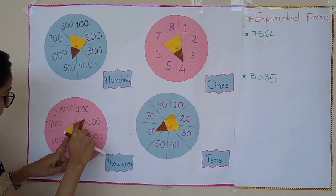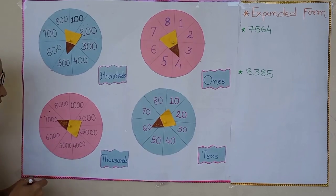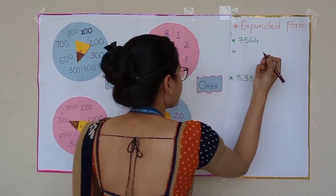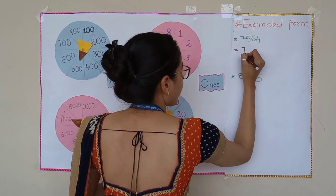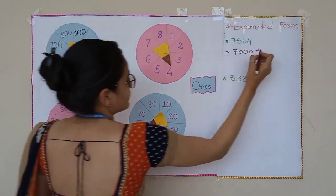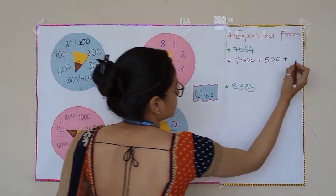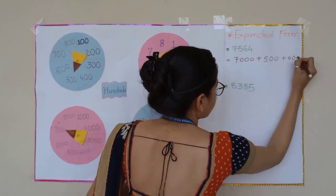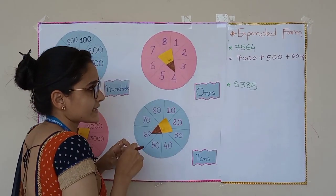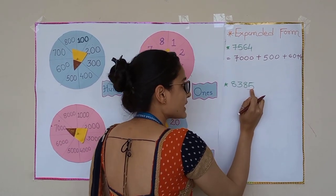I will rotate my thousands wheel to seven thousand. Now let's write down the expanded form: seven thousand plus five hundred plus sixty plus four.